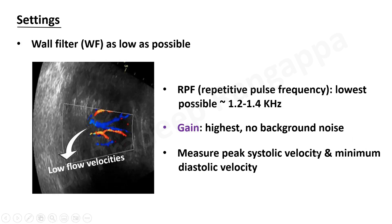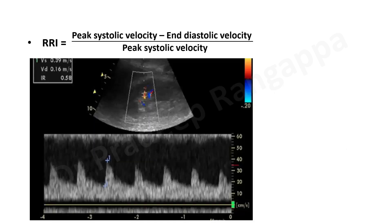Once you insoniate either the arcuate artery or interlobular arteries, you measure the peak systolic velocity and end diastolic velocity. You don't need to measure this manually. As soon as you put a pulse wave Doppler on the arcuate or interlobular arteries and get the waveform, once you put your cursor and measurement, the resistive index is automatically calculated by the machine. The renal resistive index formula is: peak systolic velocity minus end diastolic velocity, divided by peak systolic velocity.